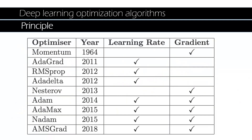Looking at the history of how different optimization techniques developed over time: we started with gradient descent, then RMSProp was invented in 2012 — it concerns adapting the learning rate — and Adam was invented in 2014, concerning both the learning rate and gradients.